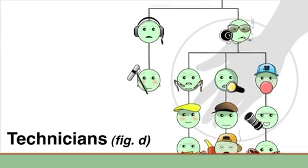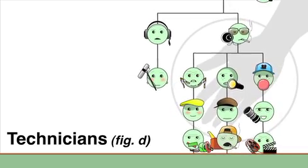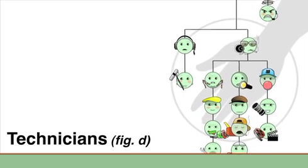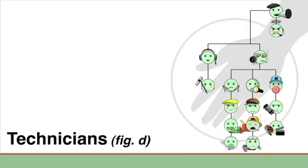These technicians often work closely with each other and usually are hired as a team. The DOP will often use the same grips, electrics and camera assistants that they always do, as they may have developed a trusting working relationship with them.